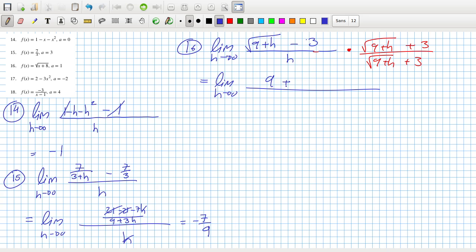9 plus h minus 9. And on the bottom, it'll be h root 9 plus h plus 3h. They cancel. They cancel. It's going to be 1 over root 9, 1 over 3 for 16.